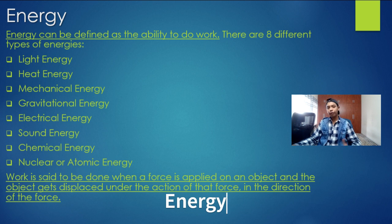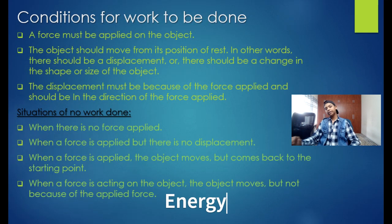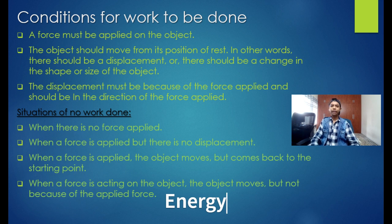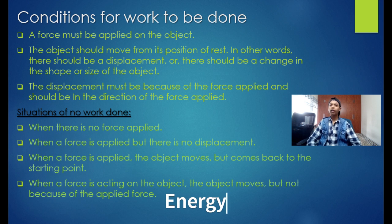Now we know what is energy, what is work, and all the different types of energies. Let's see what are the conditions for work to be done. A force must be applied on the object. The object should move from its position of rest — in other words, there should be a displacement or a change in shape or size of the object.